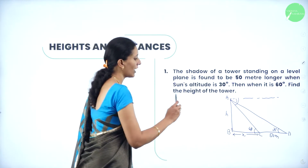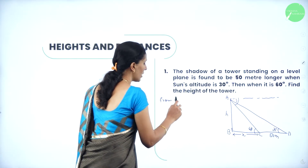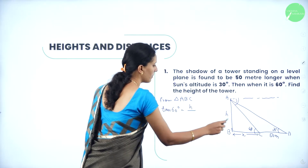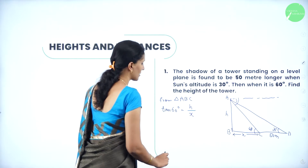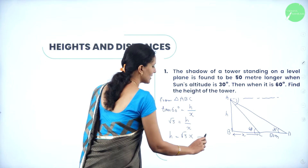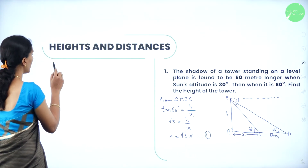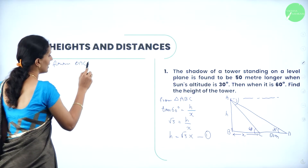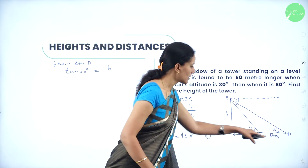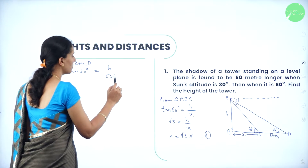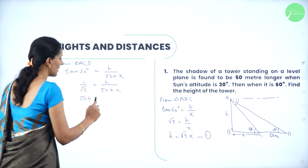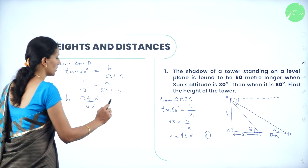To find the height of the tower we have two right angle triangles. From triangle ABC, tan 60 degrees equals opposite side by adjacent side, that is H divided by X. Tan 60 is root 3, so H equals root 3X — take this as equation 1. From triangle ACD, tan 30 degrees equals opposite side by adjacent side. The adjacent side is 50 plus X. So 1 by root 3 equals H divided by (50 plus X), or H equals (50 plus X) divided by root 3 — take this as equation 2.